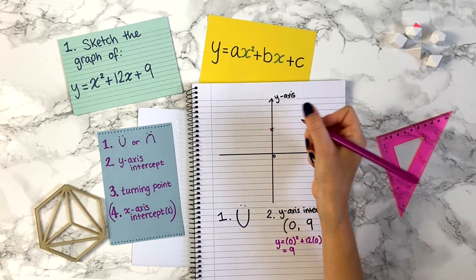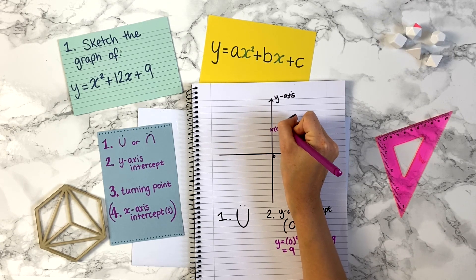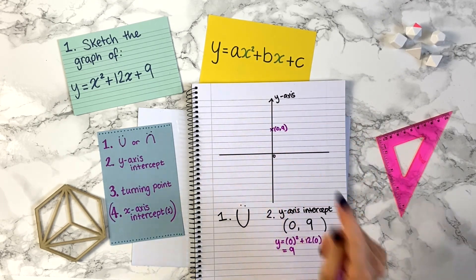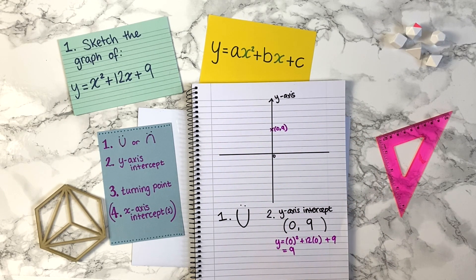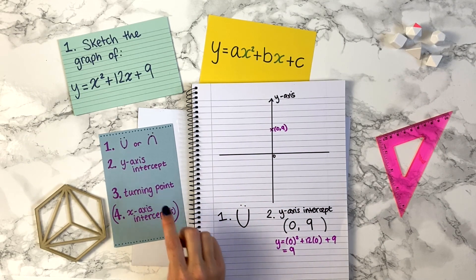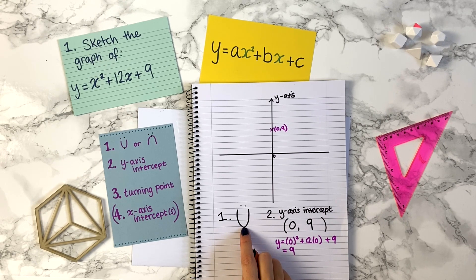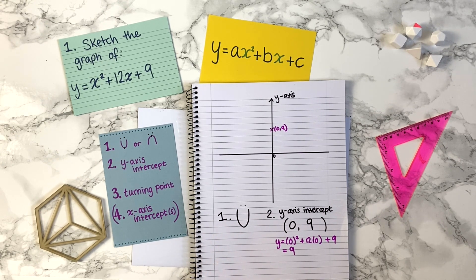Let's mark the y-axis intercept on our graph — (0, 9) is somewhere here. Remember, we're just doing a sketch so the scale doesn't matter too much, as long as we label our points. Step three is finding the turning point of the graph — in this case the minimum point — and this is where completing the square will be useful.